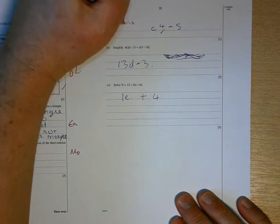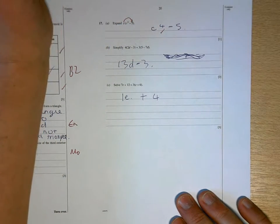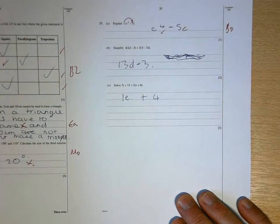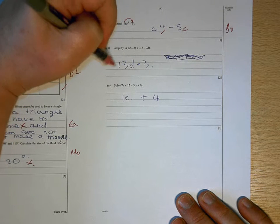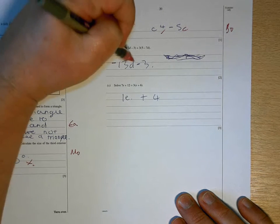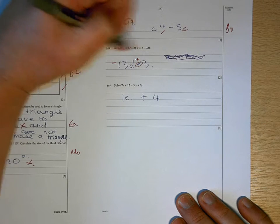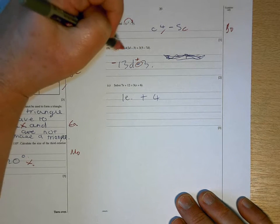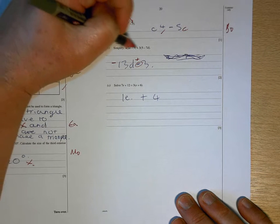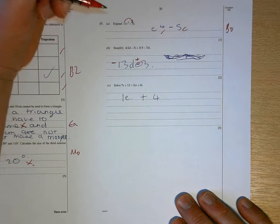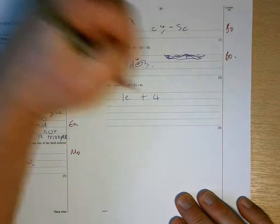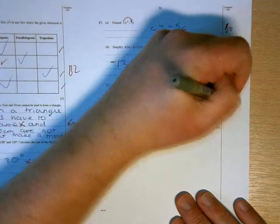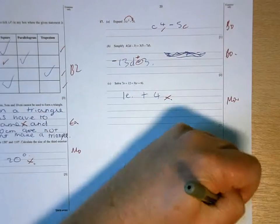C to the 4 is right, but you've also got to do c times that, so that means you lose the mark for that one. For this one, it's not 13d, it's negative and that's positive, and because you haven't shown me any workings, I can't give you any method marks. What I want to see there is that line, a line where you've dealt with the brackets and got rid of the brackets. And again, that's not right and I can't see any workings, so I can't give you any credit for that either. 2 for the page.